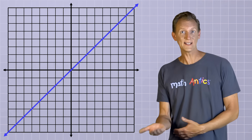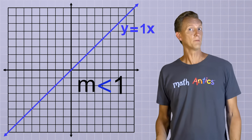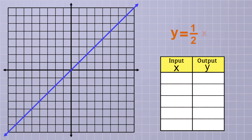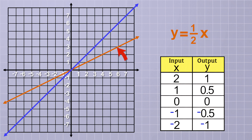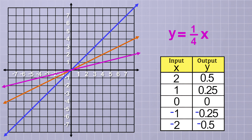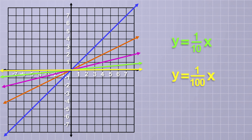But what if we want to make lines that are less steep than y equals 1x? To do that, we need to choose values for m that are less than 1. Let's start with m equal to one-half, or 0.5. If we graph y equals one-half x, we get a less steep line. Let's try m equal to one-fourth, or 0.25 — that slope is even less. As we choose smaller values for m, our slope is decreasing. Picking m equals one-tenth or one-one-hundredth, our line looks more and more like a completely flat line, getting harder to tell from the horizontal x-axis.